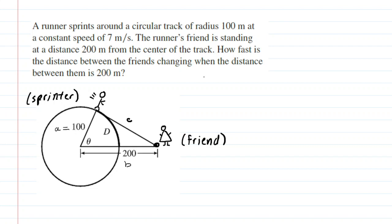We went ahead and drew a picture of this circular track. We have the sprinter running around the circular track, and we have a friend standing 200 meters from the center. The radius is 100 meters, and then there's this angle formed in the center of the circular track. We have called that theta.